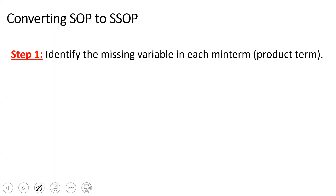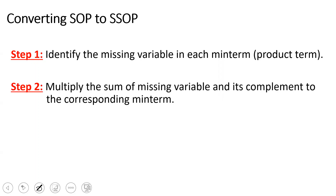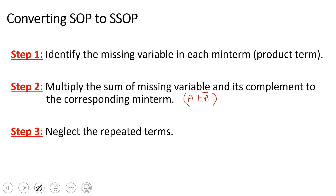The first step is to identify the missing variable in each minterm. In the expression of the product term, we will first identify what variable is missing. Step 2: multiply the sum of the missing variable and its complement to the corresponding minterm. For example, in a minterm, if we find a variable missing, that minterm gets multiplied by (A + Ā). Then, step 3: neglect the repeated terms. The remaining expression is the final equation. This is very simple — let me explain in detail.